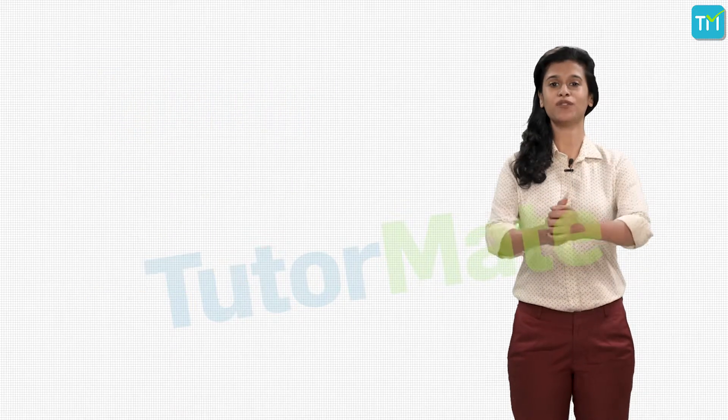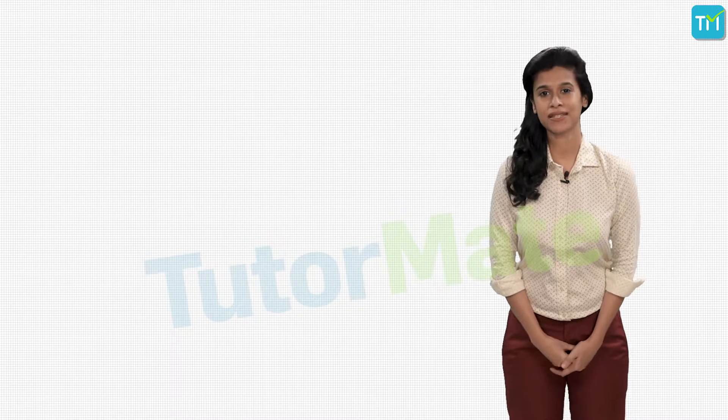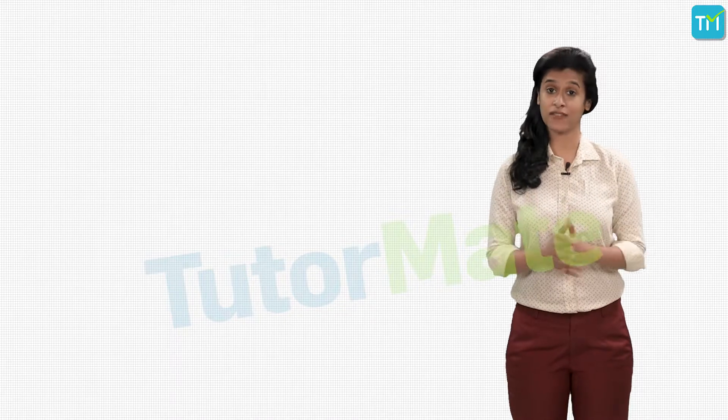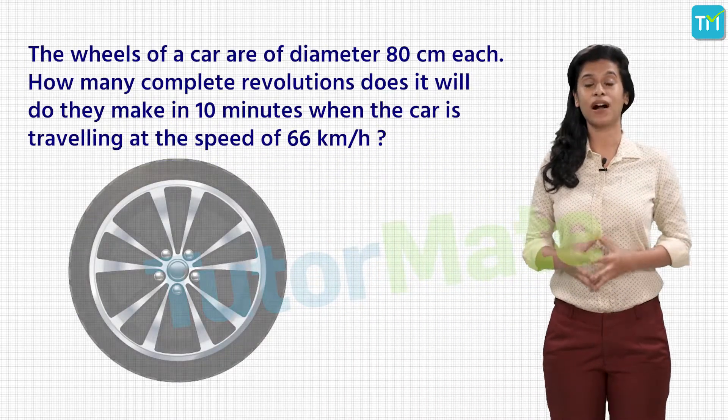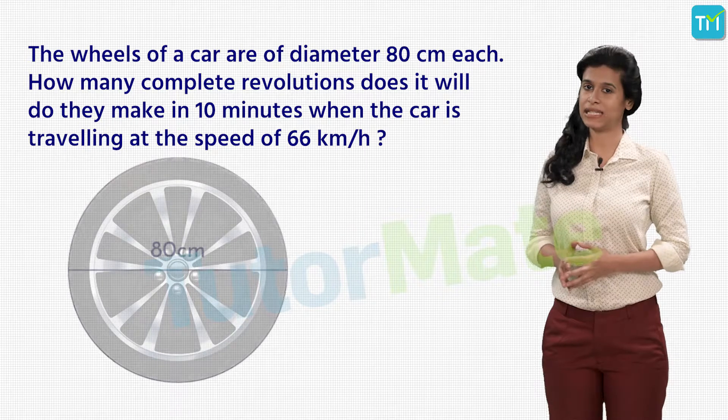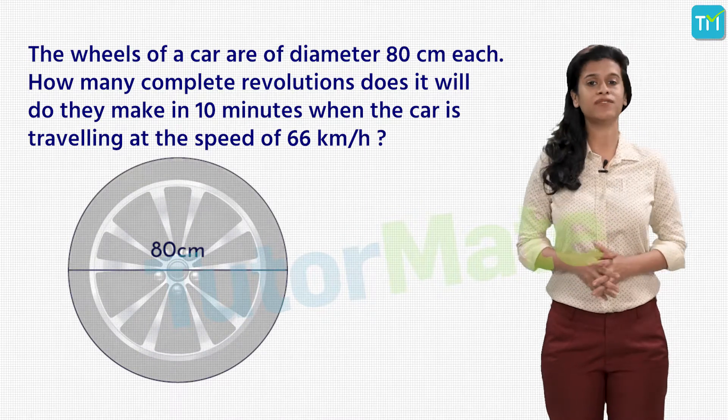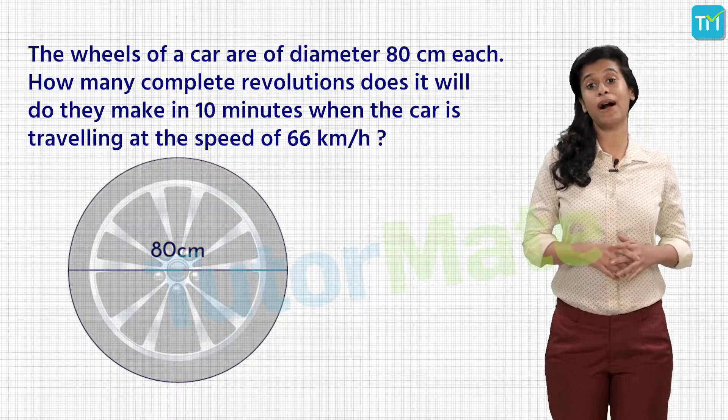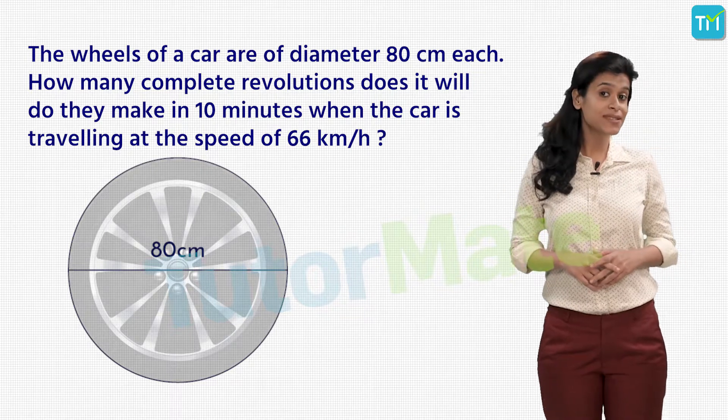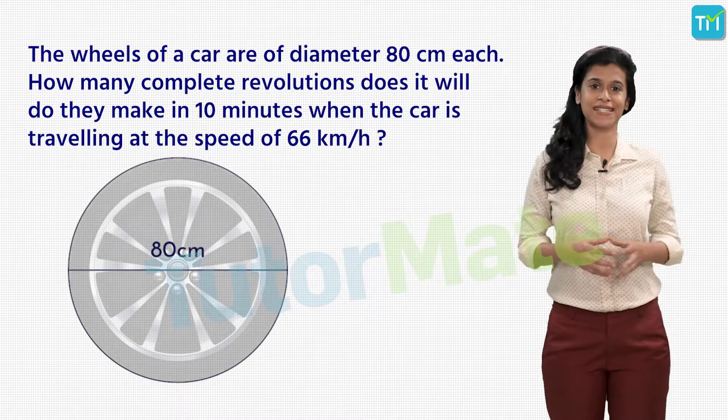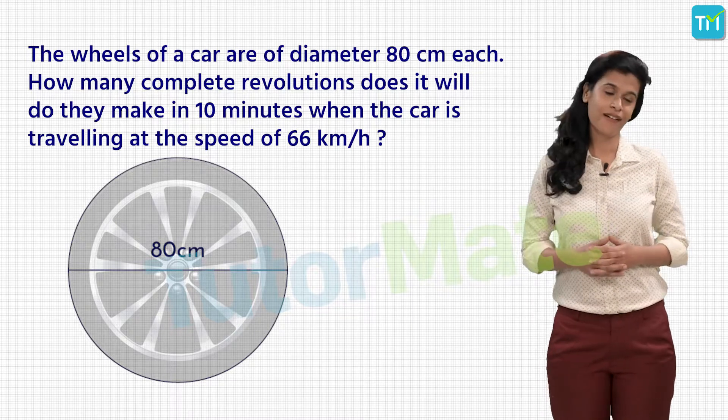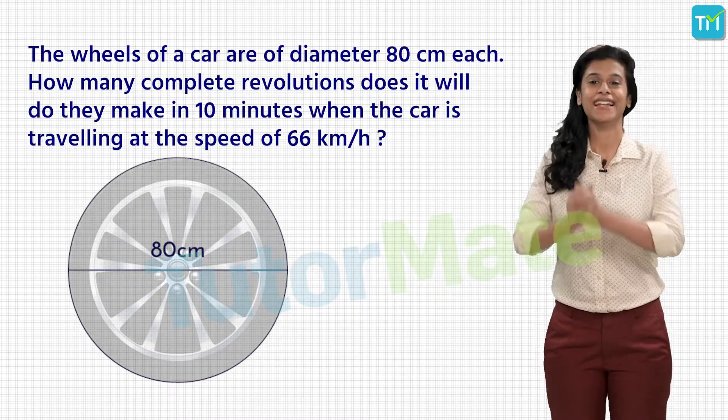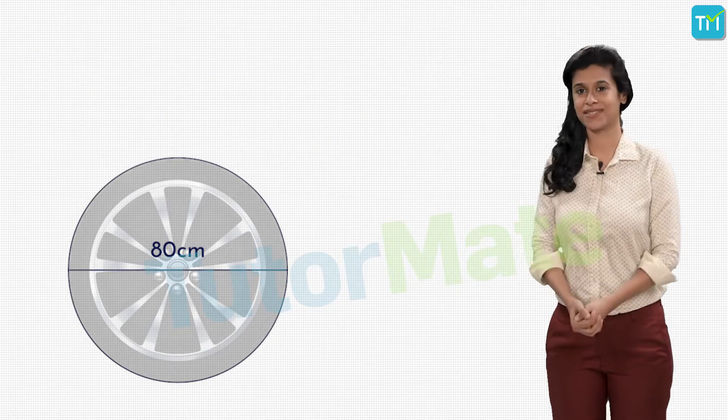Now that we know the formula for calculating the circumference and area of a given circle, let's look at a real life problem. The wheels of a car are of diameter 80 centimeters each. We have to find the number of complete revolutions made by the wheels in 10 minutes when the car is traveling at a speed of 66 kilometers per hour.